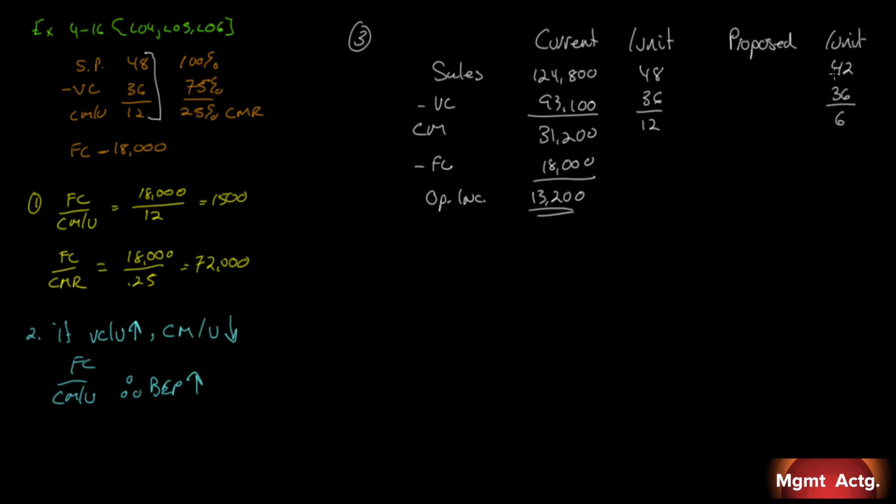We're not told that it changes our variable costs at all. So, our variable costs will stay at $36. Our contribution per margin is $6. You can think of these things like a puzzle. These are all little pieces and sometimes we can figure out one or two of the pieces to help us figure out the rest. So, we're at $42 per unit.